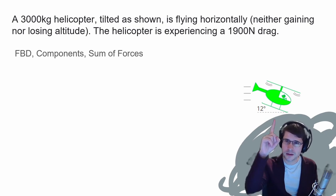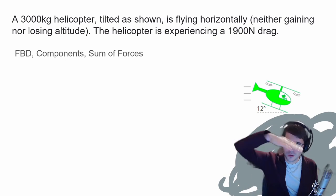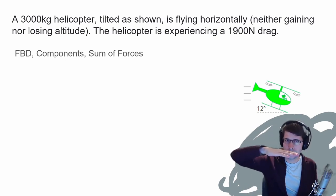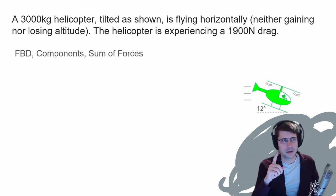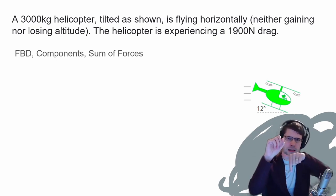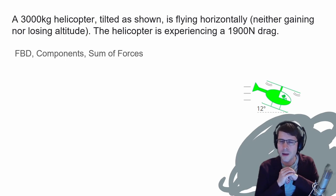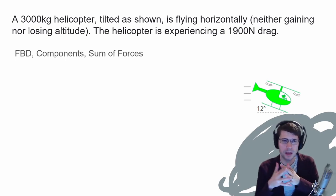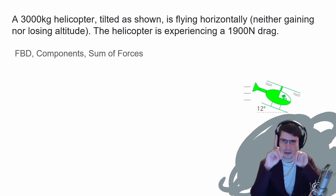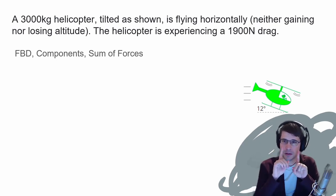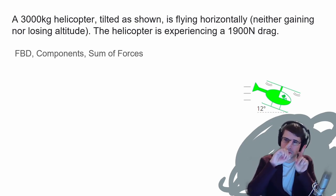Notice the helicopter is at an angle. If it were just horizontal — straight flat with no angle — there would only be two forces: a weight downward and a thrust straight upward. But really, wherever a helicopter's blades are pointed, the thrust force acts in that direction. Here the blades are pointed up and to the right, so there's a thrust force in that direction.